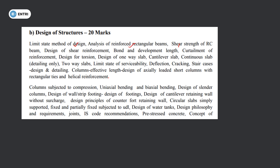Design of RCC structures: bond and development length, curtailment of reinforcement, torsion. Slabs: one-way slab, cantilever slab, continuous slab, two-way slab. Limit state of serviceability, deflection cracking, staircases — design and detailing. Columns: effective length, axially loaded short columns with rectangular ties and helical reinforcement. Columns subjected to compression with uniaxial bending, biaxial bending, slender column design. Wall strip footing, design of footing, design of cantilever retaining wall without surcharge, counterfort retaining wall. Circular slab — simply supported, fixed, and partially subjected to UDL. Water tank design.